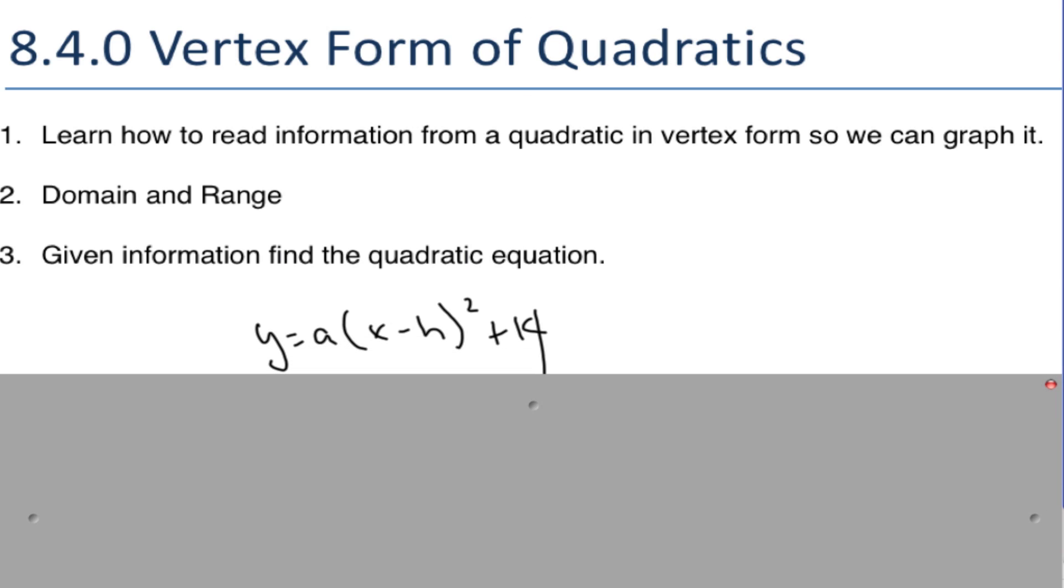There's the general vertex form of an equation. This h and k is our vertical shift, horizontal shift, and so the vertex ends up being h and k. And our a value is basically the vertical stretch which makes it fatter, skinny, and/or upside down or right side up, concave up or down.